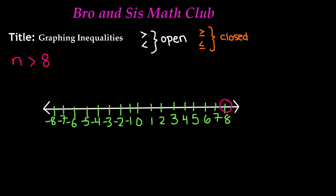And then we have to look at our symbol. Here is a hint: look at the direction in which the point is directing — not the mouth. So on the greater than symbol, the point is to the right. So you're going to shade to the right. The number line kind of ends over here, but you shade to the right, because this is telling us that the value of n is greater than the number 8 — it could go on for infinity. So this was for the inequality n is greater than 8.